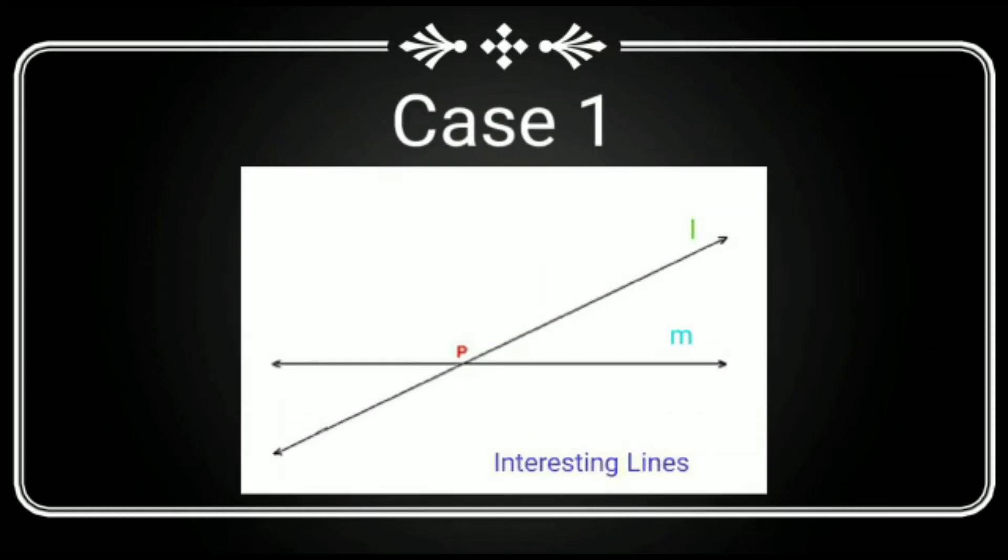In case one, the cutting lines are called intersecting lines and the point where they cut each other is called point of intersection, like in the given figure lines L and M intersecting each other at the point P.